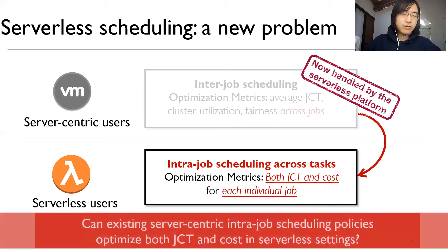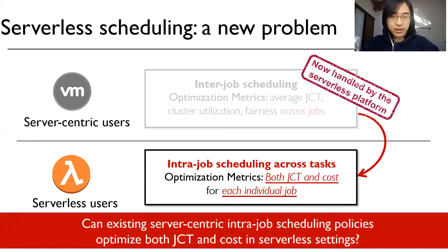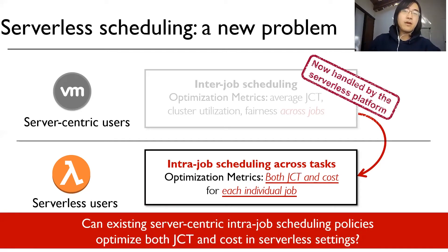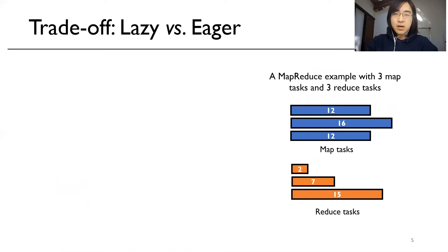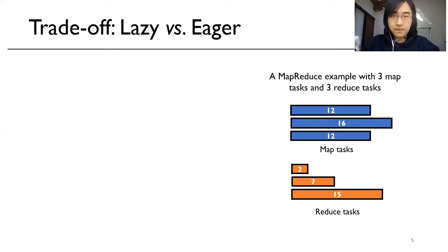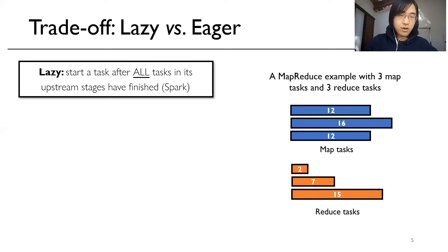We are wondering: can existing server-centric intra-job scaling policies optimize both JCT and cost in serverless settings? To answer this question, we have a simple MapReduce example with three Map tasks and three Reduce tasks. The numbers inside the bars represent the duration for each task. One widely adopted solution is to launch tasks in a lazy manner — for example, in Spark, we only start a task after all tasks in its upstream stages have finished.